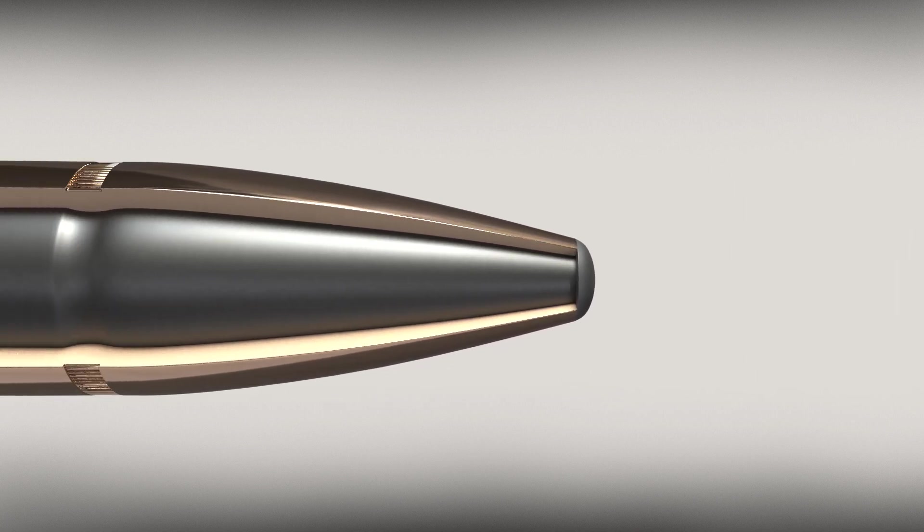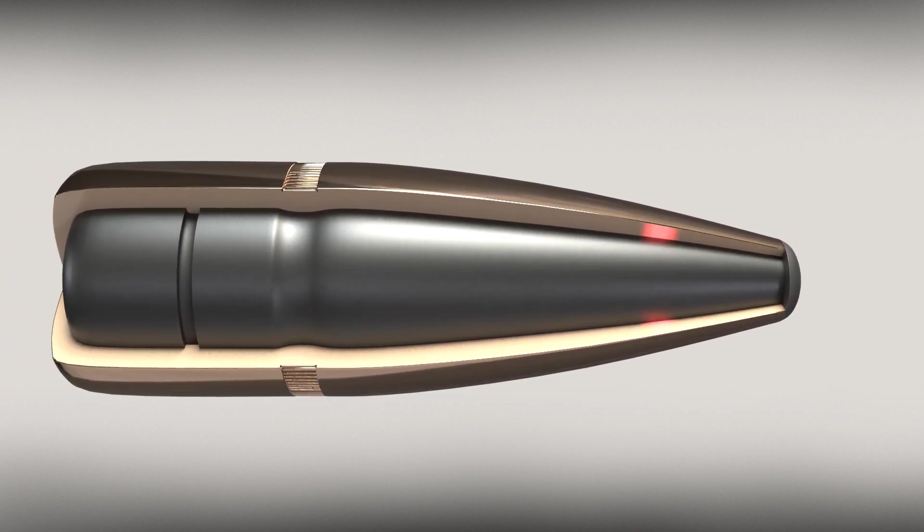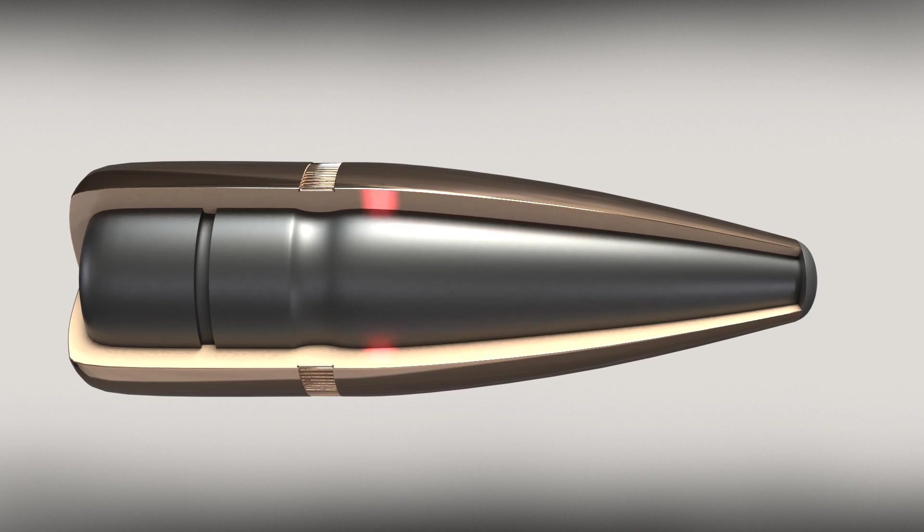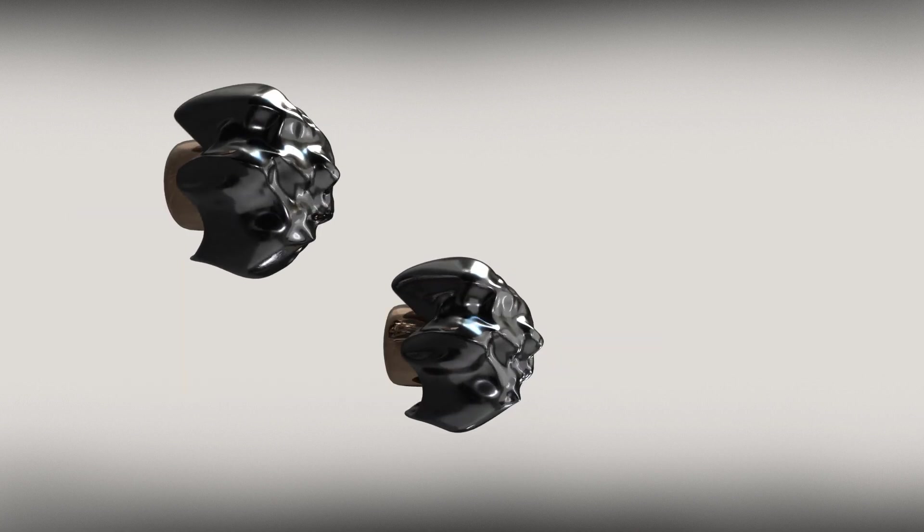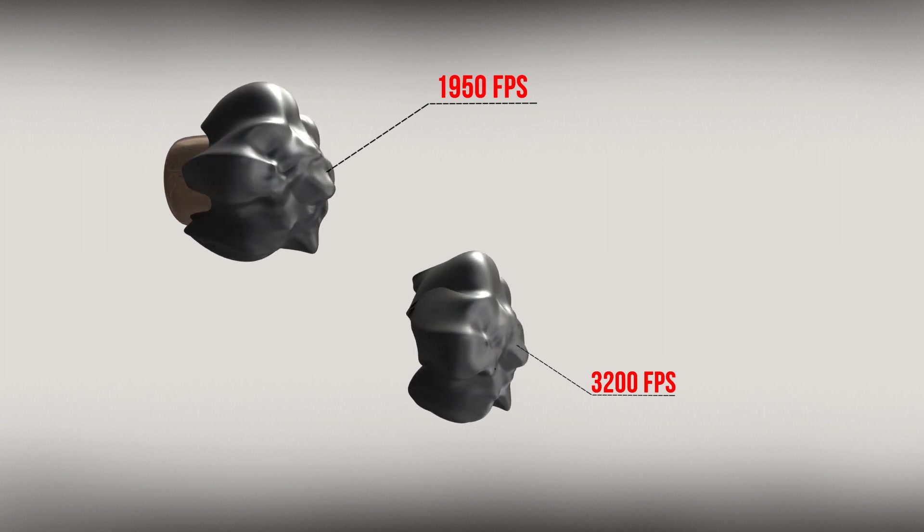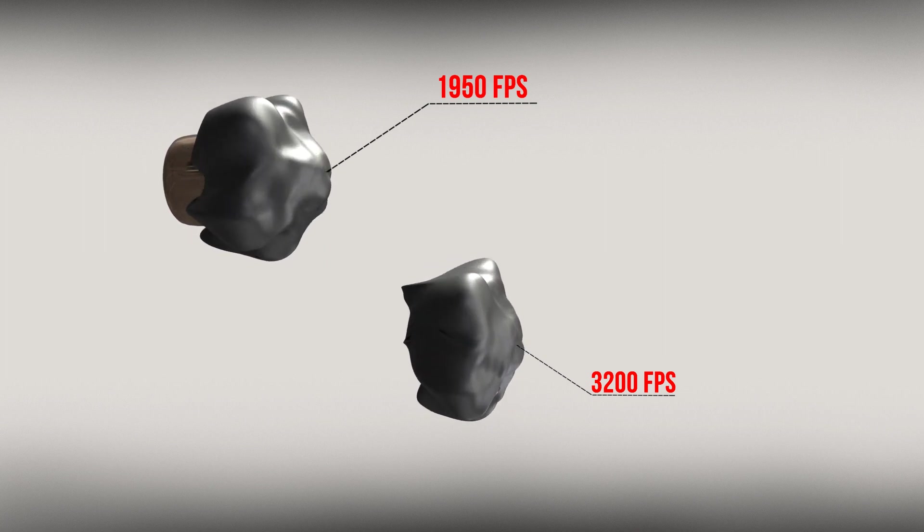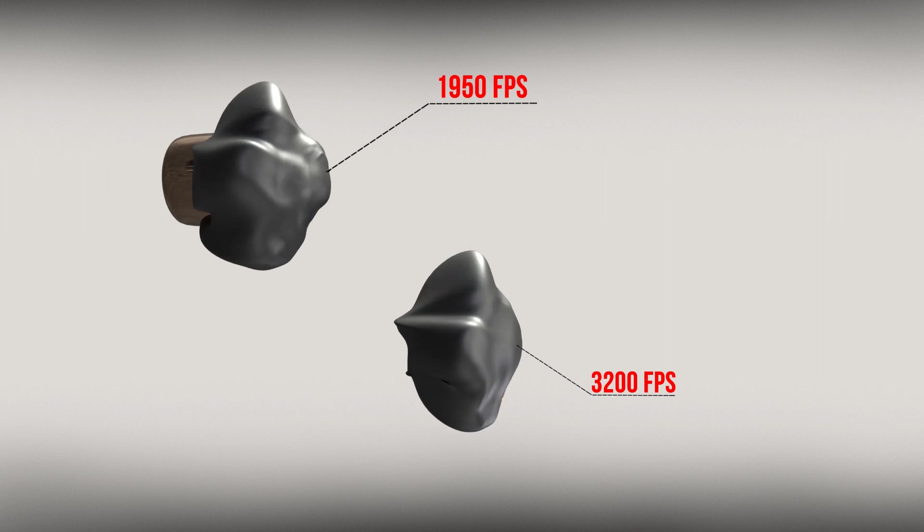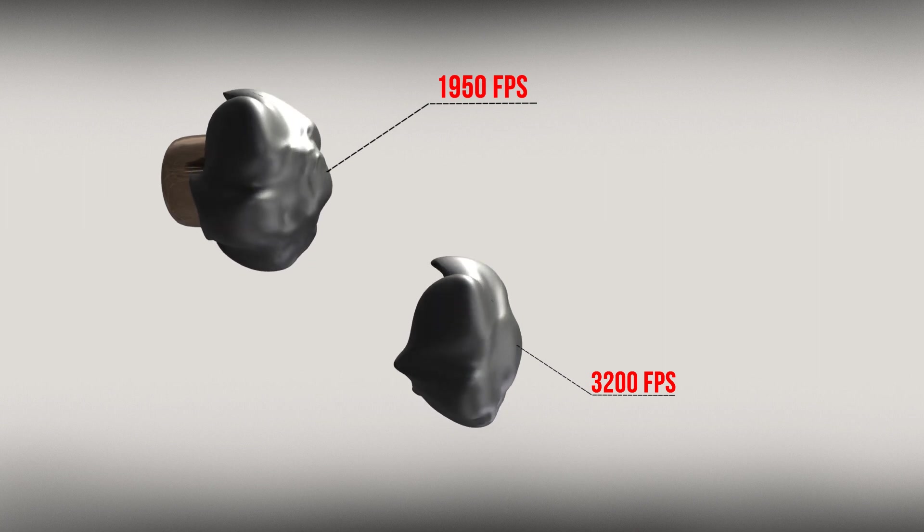And the Spire Point Recoil Proof, made for heavy recoil cartridges with a heavy jacket that aids in protecting the tip to avoid deformation while in the magazine for heavy recoil. The Interlock is also designed to perform best at velocities ranging from 2200 to 3200 feet per second and provide reliable expansion and impact speeds as low as 1950 feet per second.